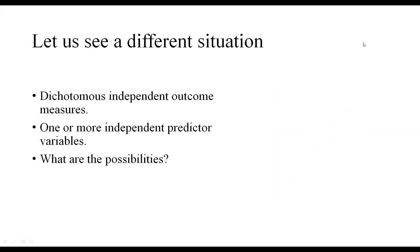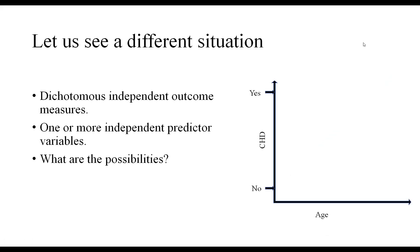Now let's discuss a different situation: when our response variable is a dichotomous independent outcome measure — in other words, true or false, good or bad, yes or no kind of responses. For example, whether an individual had coronary heart disease or not. One or more independent predictor variables are available — like we want to predict whether a person will have CHD using one or more independent variables. So CHD has two states, yes or no, and we know the age of that individual. We want to predict, using age, whether that individual will have CHD. The data will show some people in the 'no' group and some in the 'yes' group; usually, the 'yes' cases have a slightly higher age compared to the 'no' cases.